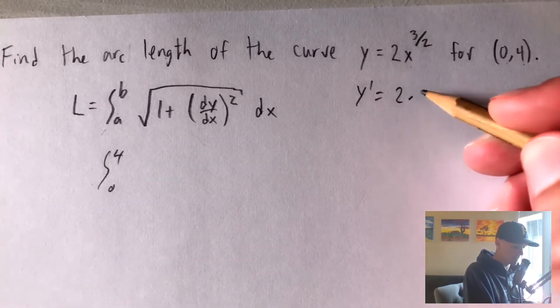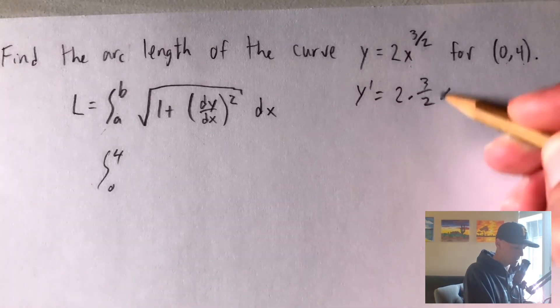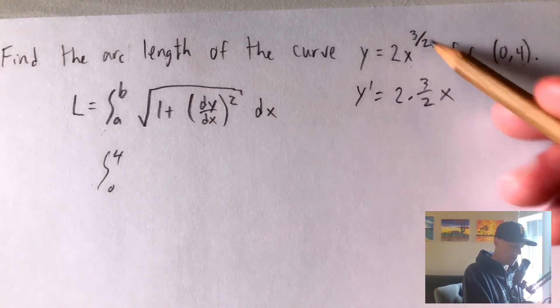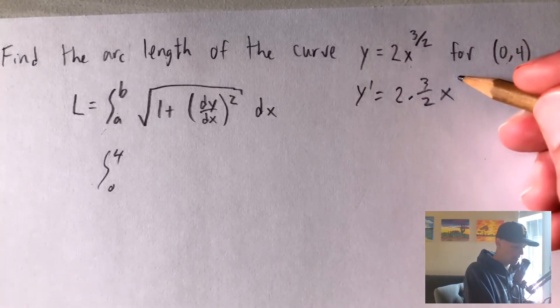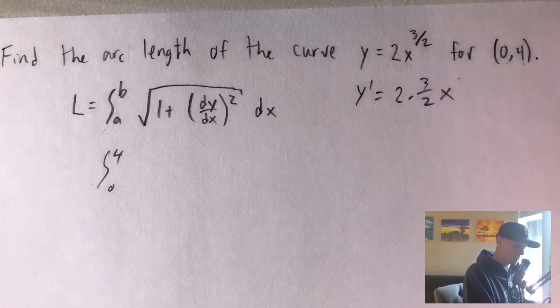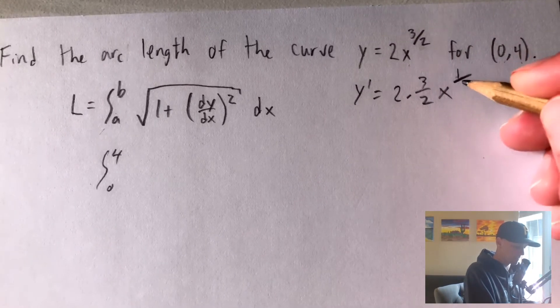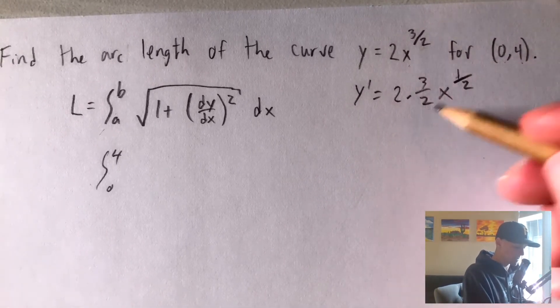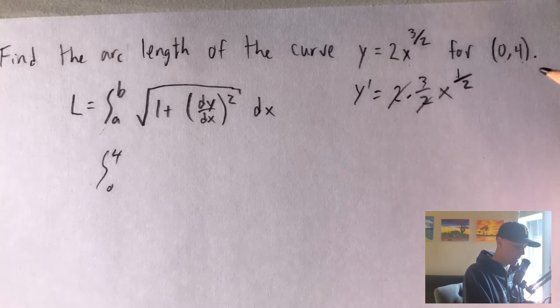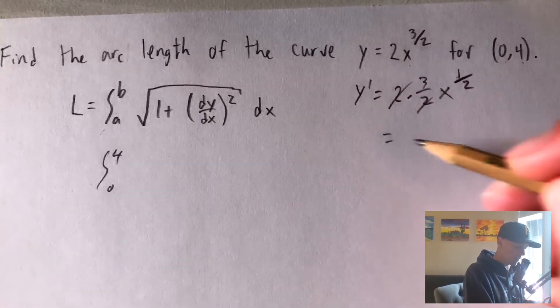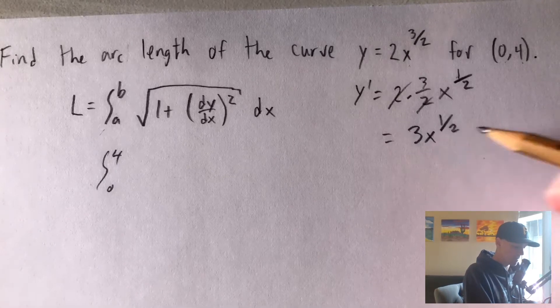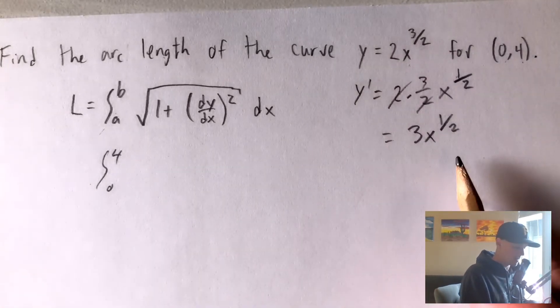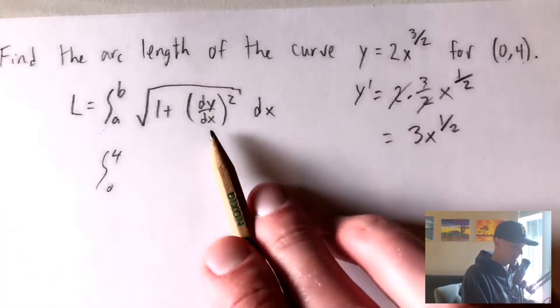So 2 times three halves times x. And then we're going to lower our power by 1. So 3 halves minus 1 would be the same as 3 halves minus 2 halves, which is just 1 half. And of course, this will simplify by these 2's canceling out. And we're just going to get y prime equals 3x to the 1 half.